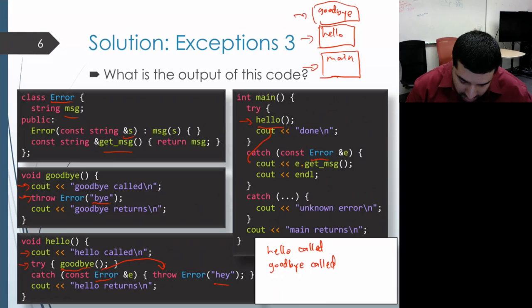So execution will proceed to its body. And that's going to print out the message that was passed when constructing that error object. And that is the message hey. So we get hey printed out.